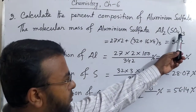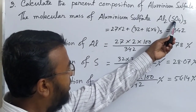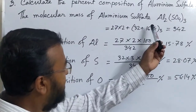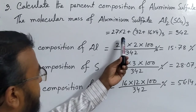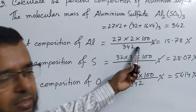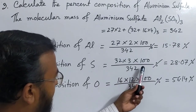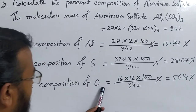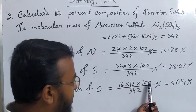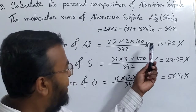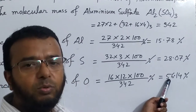Summary: the formula of aluminum sulfate is Al2(SO4)3. The molecular mass calculation: aluminum 27 × 2, sulfur 32 × 3, oxygen 16 × 4 × 3, total = 342. Using the formula — atomic mass × number of atoms × 100 ÷ molecular mass — we get: aluminum 15.78%, sulfur 28.07%, and oxygen 56.14%.